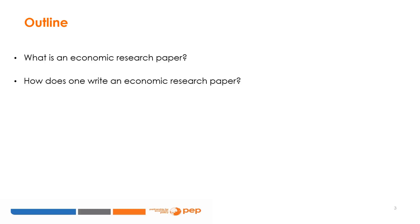For this module, we will briefly discuss what an economic research paper is, focusing exclusively on applied economics research. Then, we will share insights about what it takes to write a good economics research paper. The targeted audience for this module is primarily scholars interested in development research. Most examples will be drawn from empirical research papers, but the content can easily be applied to applied theory or CGE modeling papers with a minor twist.